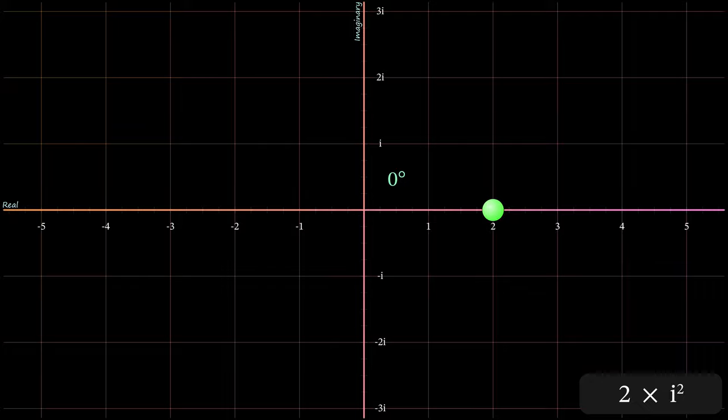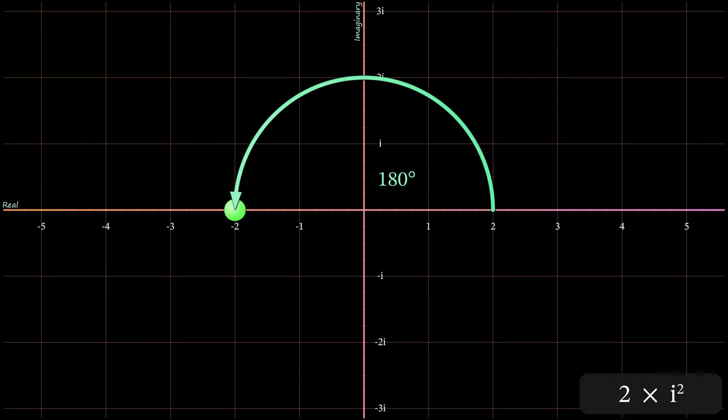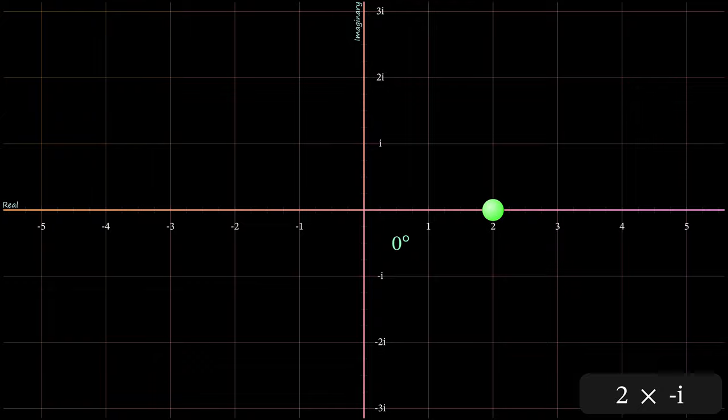In fact you can think of multiplying a number by negative 1 as a 180 degree rotation. Using only real numbers this is a sign swap. But you can see that thinking of this action as a 180 degree rotation generalizes to complex numbers quite nicely. Multiplying by negative i is a negative 90 degree rotation.